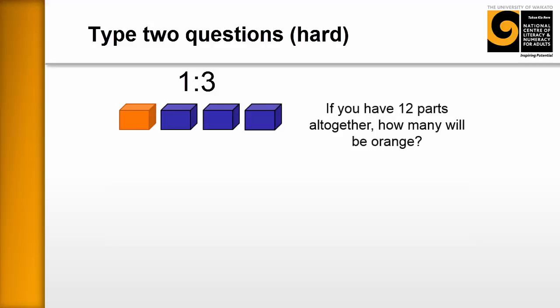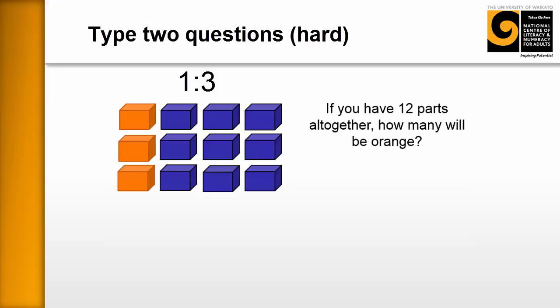You want to follow it up with an extending question. If you have 12 parts all together, how many will be orange? So now they're beginning to see patterns again. 12 parts. Well, we know we've got four there. So perhaps they increase it again and again until they get 12. And they can see that three of those are orange and nine of those blue. So again, we're extending their thinking.